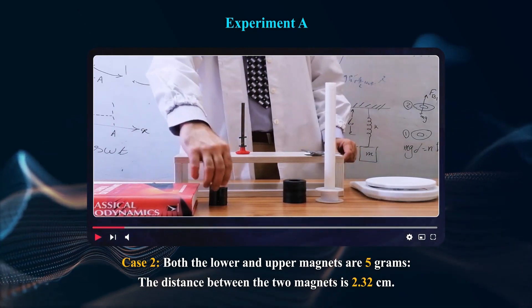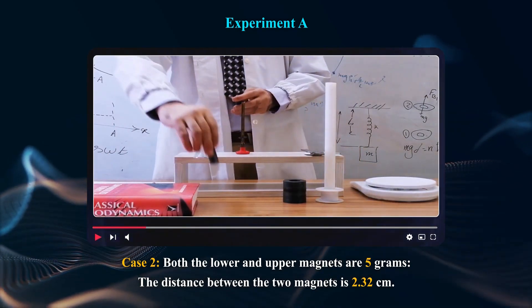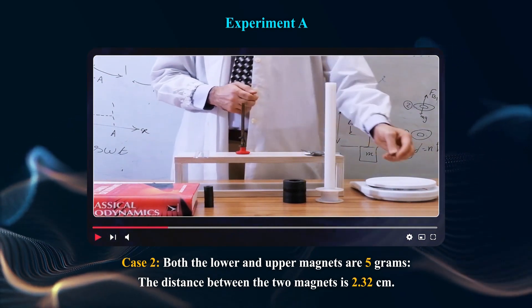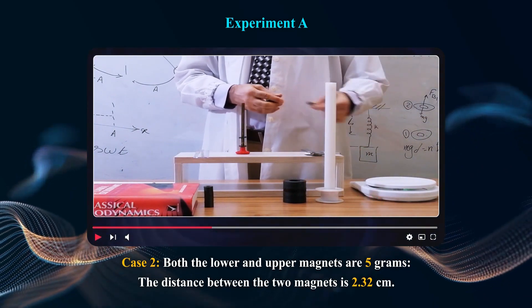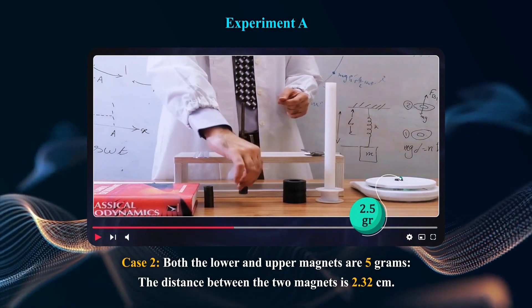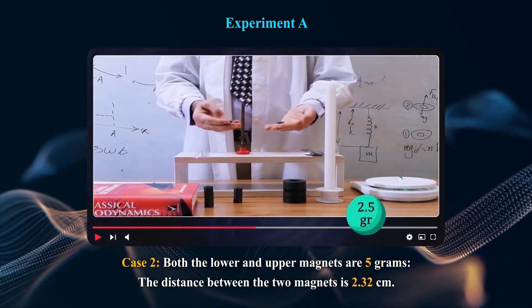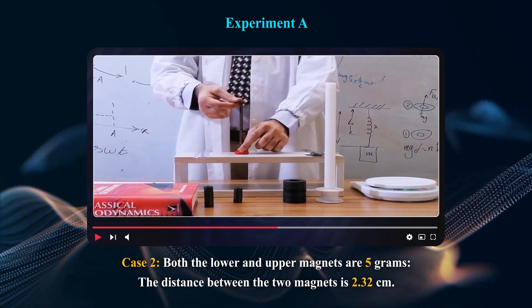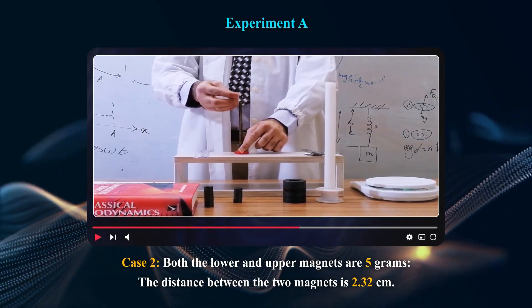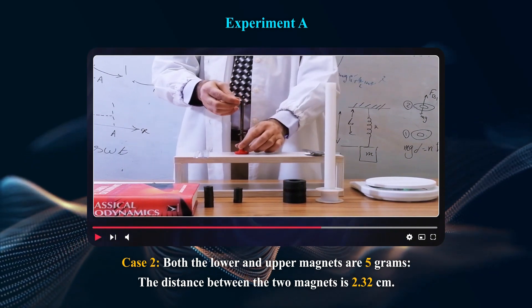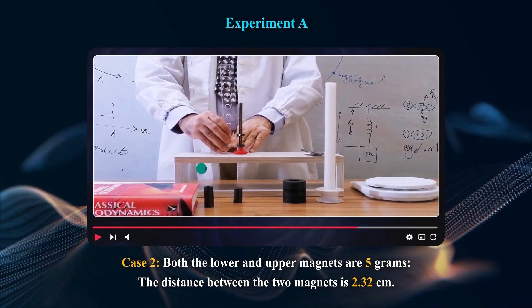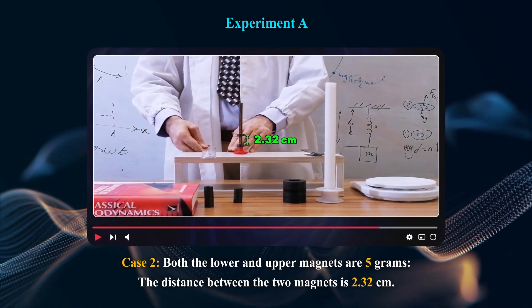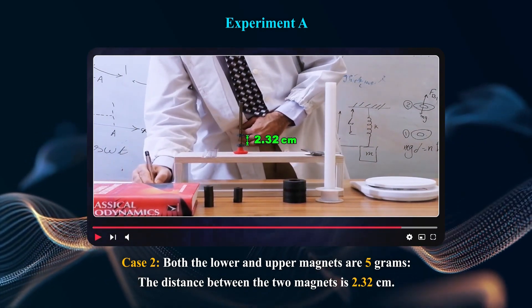Case 2: Both the lower and upper magnets are 5 grams. The distance between the two magnets is 2.32 cm. Therefore we have the corresponding calculated values.